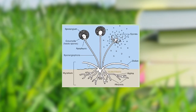Here you can see the picture of the sporangiophore bearing a single sporangium. The columella is present inside the spore sac, which is filled with spores. When mature, the sporangium bursts open, the spores come out, and are dispersed with the help of wind.